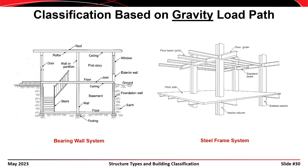Structures can also be classified based on the load path employed. For gravity systems, the bearing wall system on the left carries gravity loads from the roof and floors through the walls and down into the foundations. The structural steel frame system on the right carries load from the floor decking to a floor beam, from the floor beam into a girder, from the girder into the column, and then from the column down into the foundation.